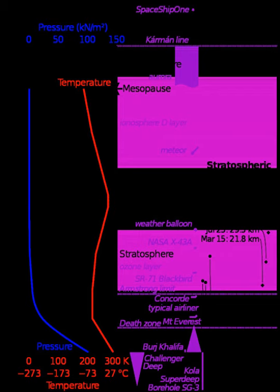The International Standard Atmosphere is an atmospheric model of how the pressure, temperature, density, and viscosity of the Earth's atmosphere change over a wide range of altitudes or elevations.